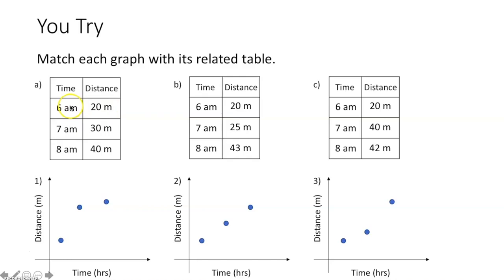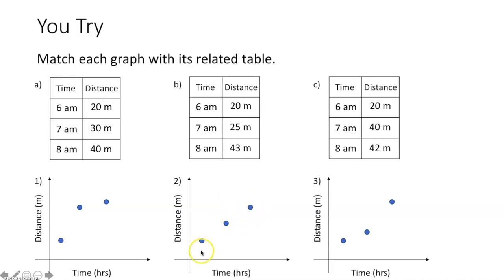In table A, we go from 20 meters to 30 meters in one hour — an increase of 10 meters — and then increase another 10 meters the next hour. We're increasing the same amount each time interval, so the distance increases by the same amount each hour. That matches the graph where after one hour we increase a certain amount, and after another hour we increase the same amount. Table A goes with graph two.